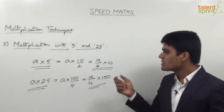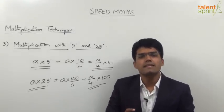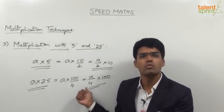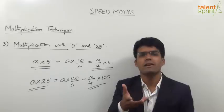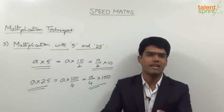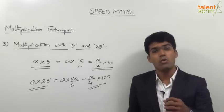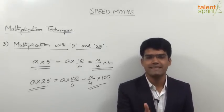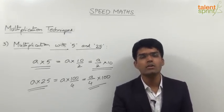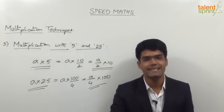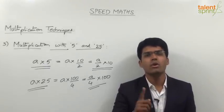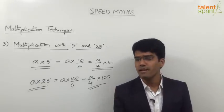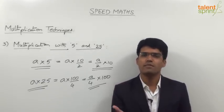Let us take some examples for multiplication with 25. 8 into 25: one fourth of 8 is 2, and 2 into 100 is 200. 24 into 25: one fourth of 24 is 6, so 6 into 100 is 600. 32 into 25: one fourth of 32 is 8, so 32 into 25 is 8 into 100, which is 800. Likewise, 48 into 25 is 1200, because one fourth of 48 is 12, and 12 into 100 is 1200.